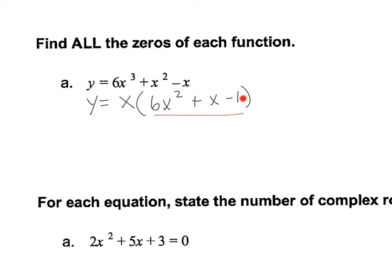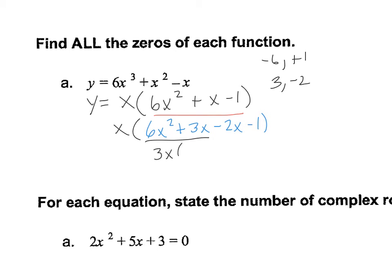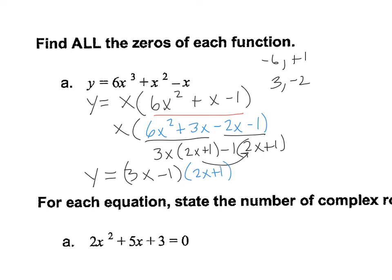So factors of negative 6 that add up to 1 are 3 and negative 2. So I'm going to write this as 6x squared plus 3x minus 2x minus 1. I can factor this by grouping. So factors of this are 3x, and I can write 2x plus 1 right here. The value that goes in here has to be negative 1 in order to multiply and get negative 2x minus 1. So then I have 3x minus 1 times 2x plus 1 times x.